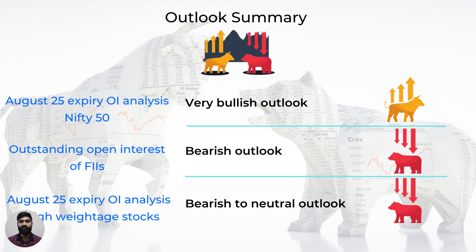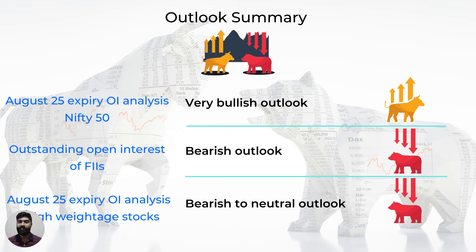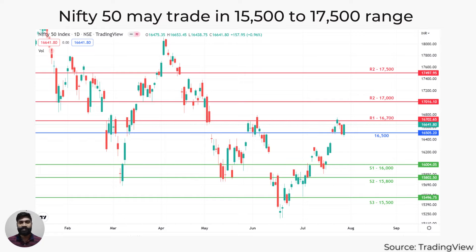Let's summarize all the cues at different levels. Starting with the OI data of Nifty 50 August monthly expiry option contracts, it indicates a very bullish sentiment. However, the OI of FIIs in index options tells a different story — FIIs have bought a lot of put contracts compared to call contracts, indicating bearish sentiment. The heavyweight stocks are also indicating a bearish to neutral sentiment. To round it up, the Nifty 50 is expected to be volatile in the coming month given these divergences. The trading range can be widened to 15,500 to 17,500.